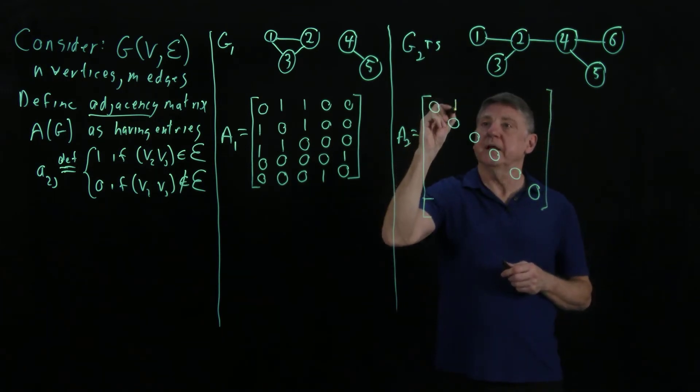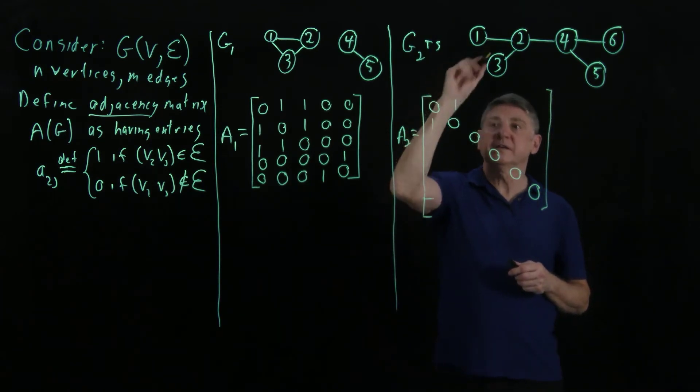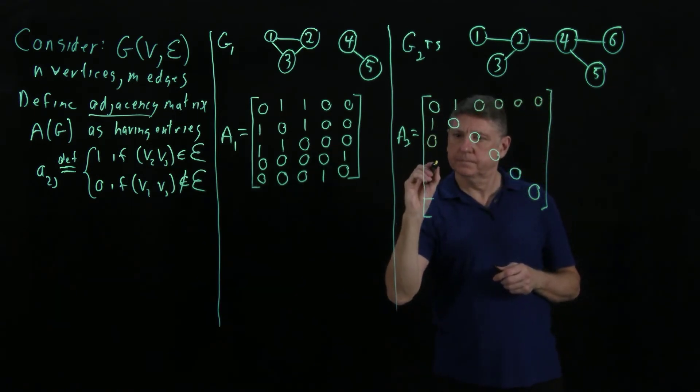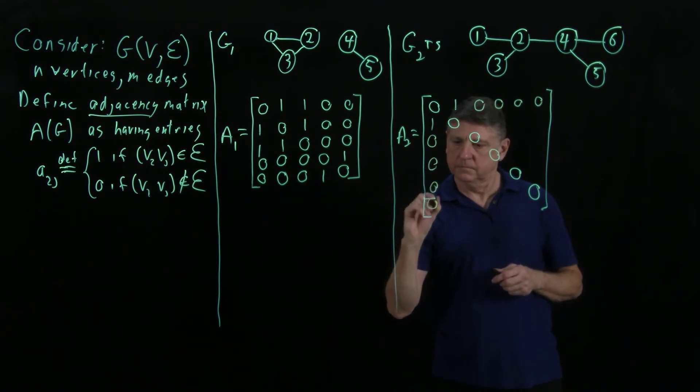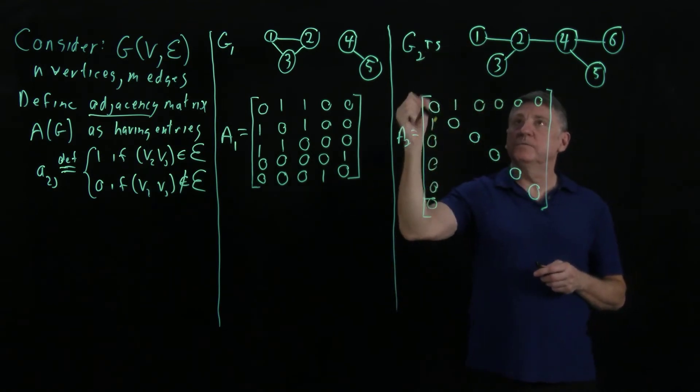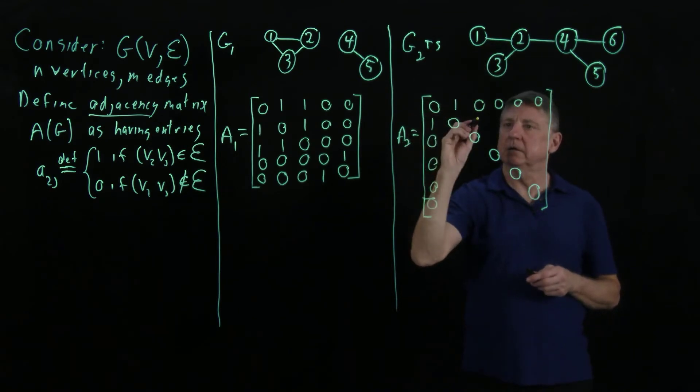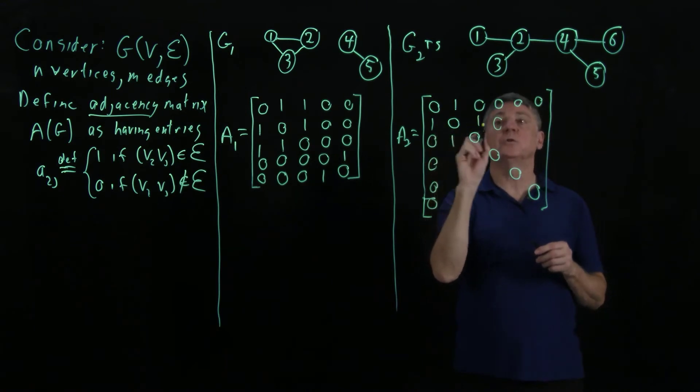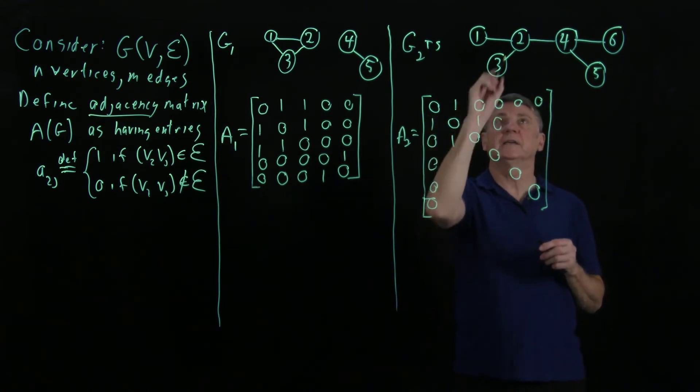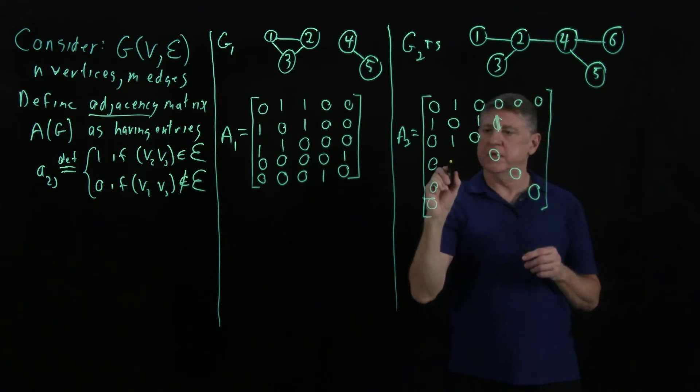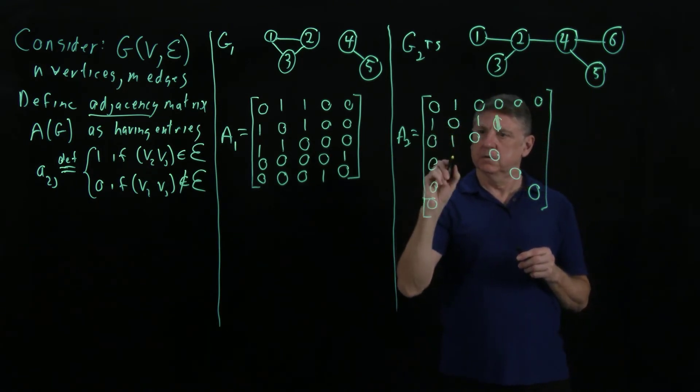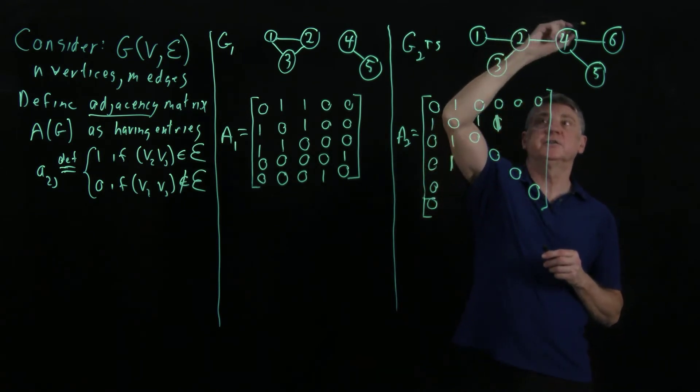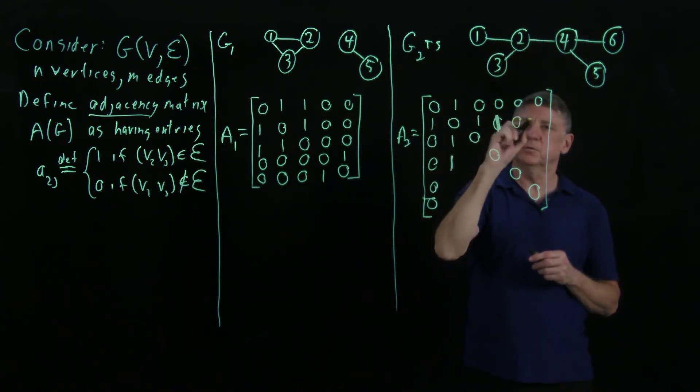1 is connected to 2. And 2 is connected to 1. 1 is not connected to anything else. 2 is connected to 1. We've noted 2 is connected to 3. And 2 is also connected to 4. So that is 2 is connected to 4. So that'll be entry 2, 4 and entry 4, 2. 2 is not connected to 5 or 6. Those are zeros.